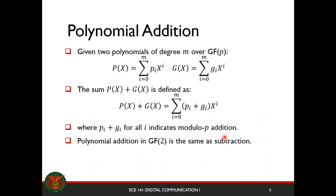Let's look at polynomial addition. Given two polynomials of degree m over your Galois field with p elements, when you add p(x) and g(x), you're basically getting the sum of the coefficients of the polynomial with the same degree, where the addition inside the parentheses indicates modulo p addition. Your polynomial addition in GF(2) is the same as subtraction, since you have only two elements.